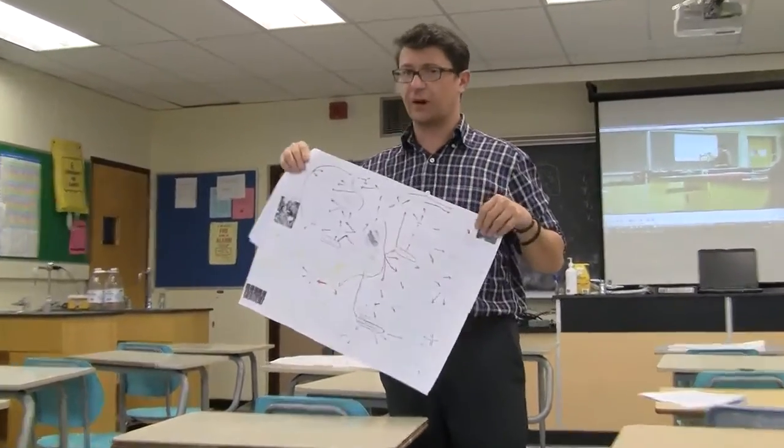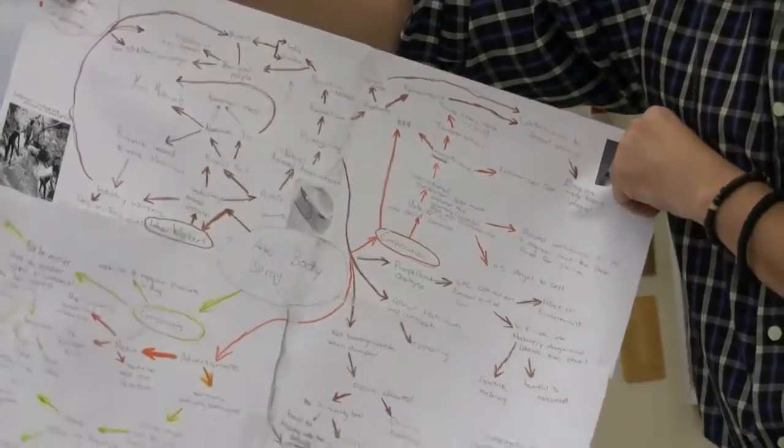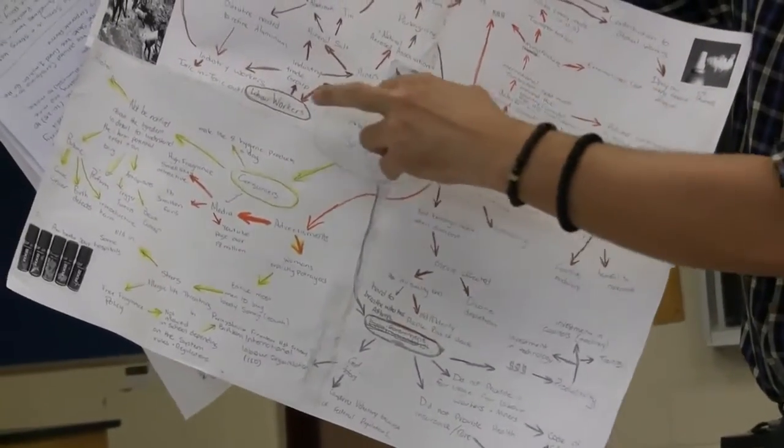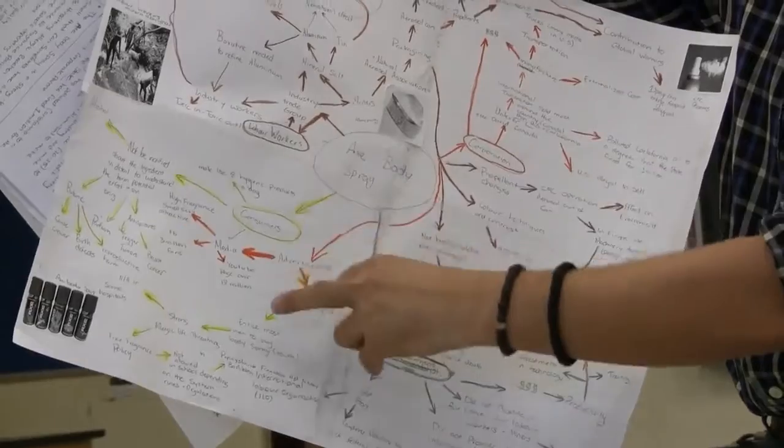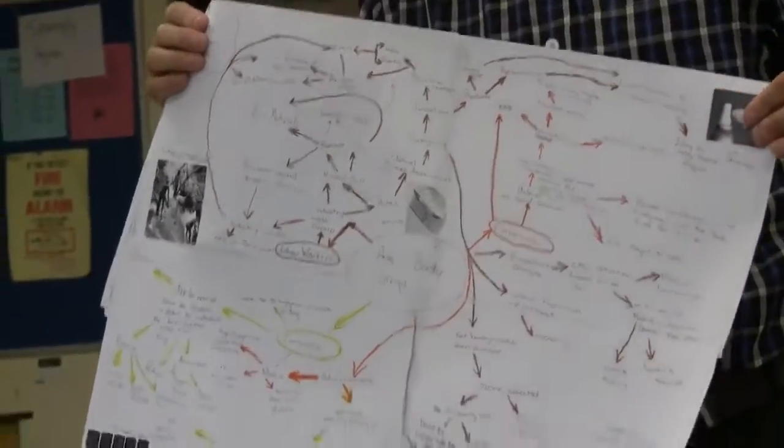And so his final revised map actually was organized around various stakeholder networks. So corporations, labor workers, consumers, governments. And so that's how he chose to organize his particular network map.